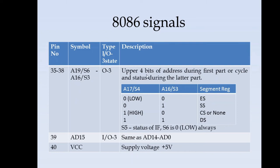A16 to A19 are the upper 4 bits of address during the first part of the cycle. Or it indicates the status during the later part. Based upon S3 and S4 you can represent what is the segment address that is being used. For example if it is 00 it indicates extra segment access. If it is 01 stack segment. If it is 10 it could be code segment or no access. If it is 11 it is data segment.